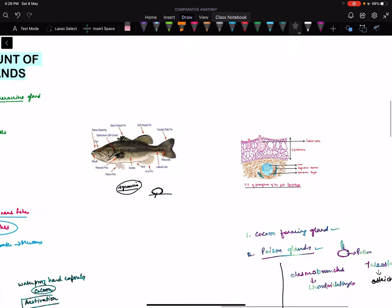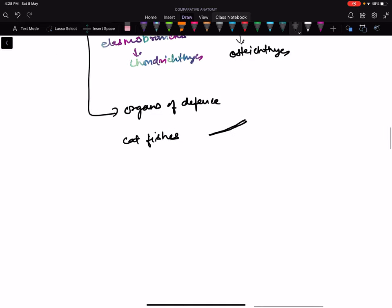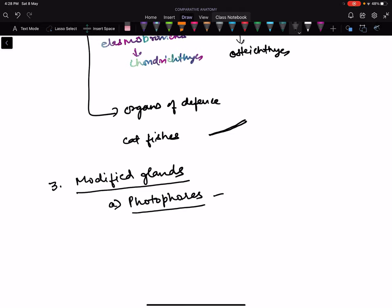Next, if you see third - first is cocoon, second is poison, third type of glands are multicellular glands. Some of the multicellular glands have been modified, meaning modified glands. Photophores or luminous glands - multicellular glands have been modified into photophores.